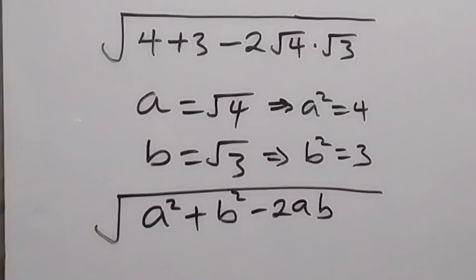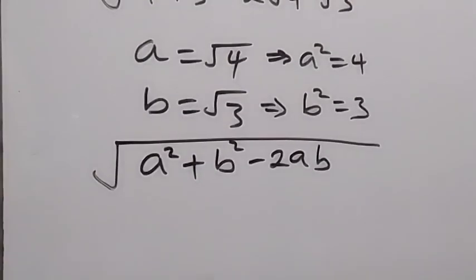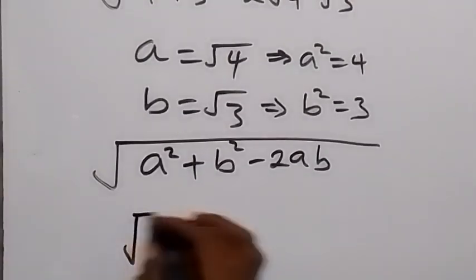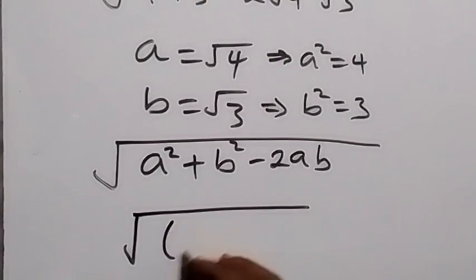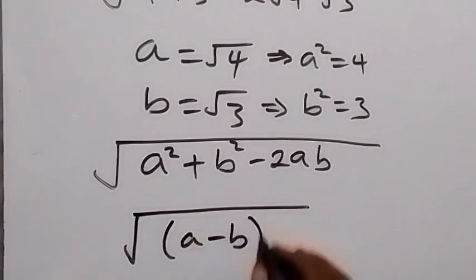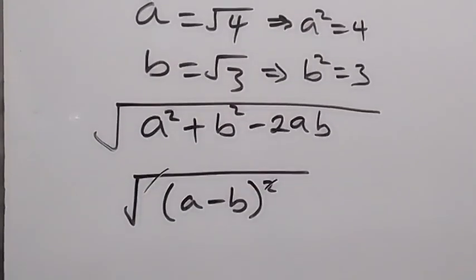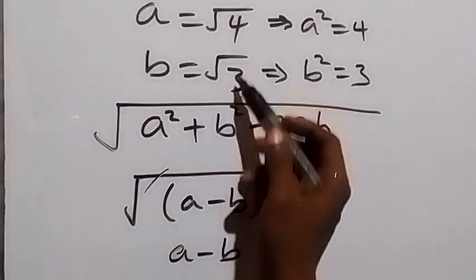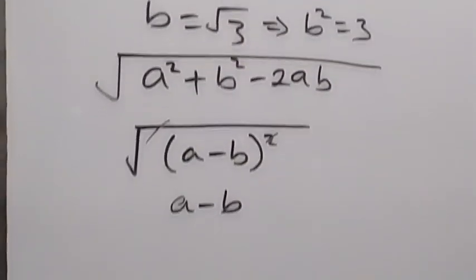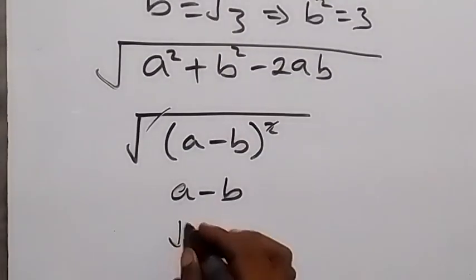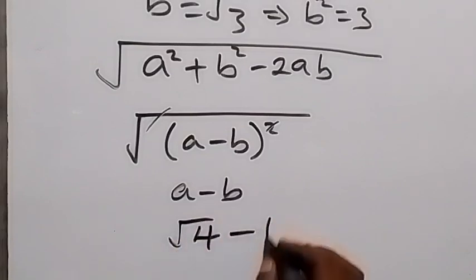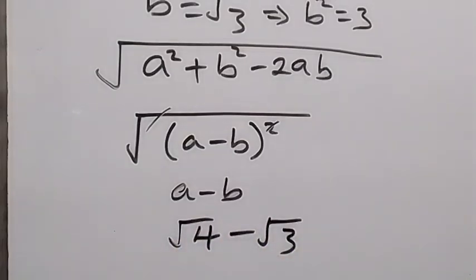That's b. So what we have inside this root can simply be written as square root of (a - b)². The expansion gives us this. Square root and square cancel, and we have simply a minus b. From here, a is √4 and b is √3, so that will be √4 minus √3.